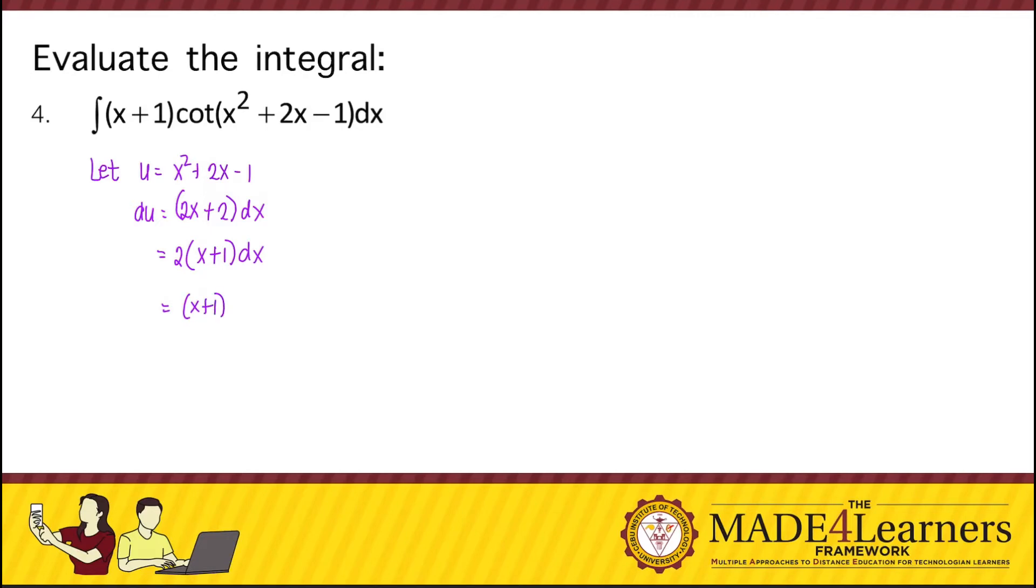So that x plus 1 dx is equal to du over 2. Then we can rearrange our integrand into cotangent of x squared plus 2x minus 1 times x plus 1 dx. And then just replace it with a new variable, that's cotangent of u, and then x plus 1 dx is du over 2.